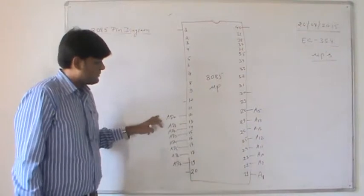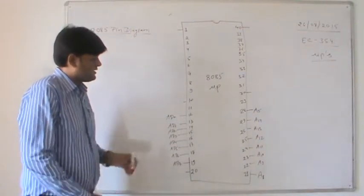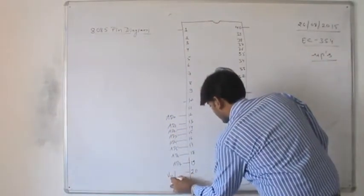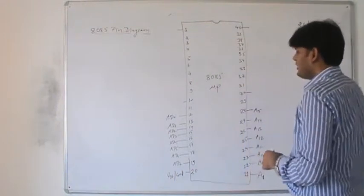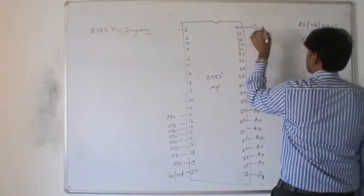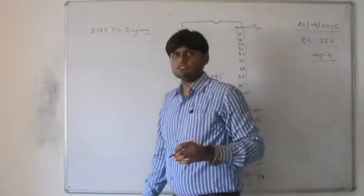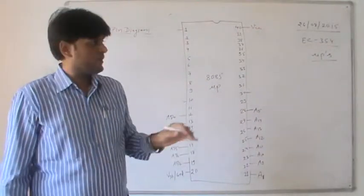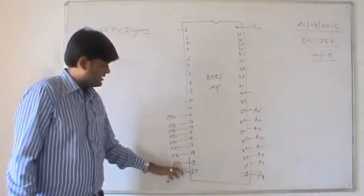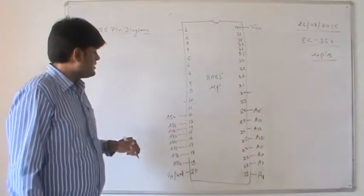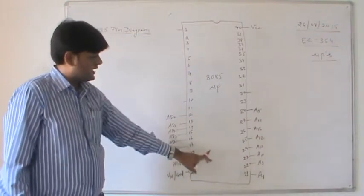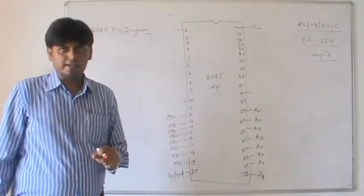Pin number 20 is VSS, the ground pin for the 8085 microprocessor, and pin number 40 is VCC — the positive supply voltage of plus 5 volts given to this chip. So we have the address bus from pin number 12 to 19 and 21 to 28, giving a complete 16-bit address bus, as well as our 8-bit data bus from pin number 12 to pin number 19.